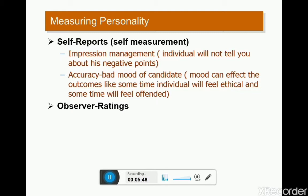Now we are going to discuss measuring personality. There are two methods to measure personality: one is known as the self-report method and another is known as the observer rating method. Self-report means the individual will measure his or her own personality by themselves. The observer rating method means another person — a third party — will observe and rate you on different traits.